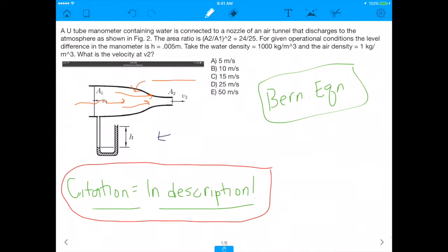It says a U-tube manometer containing water is connected to a nozzle of an air tunnel that discharges to the atmosphere. I want to point out, this is the water right down here - that's the water manometer, and at the top you have an air tunnel, so air is going through this tunnel. The area ratio a2 over a1 squared is 24 over 25, and for all given operational conditions the difference in the manometer is 0.05 meters. What is the velocity at v2? There's going to be so many moving parts, so let's get right into it.